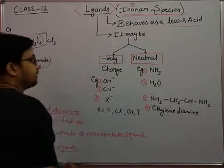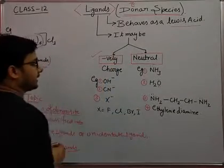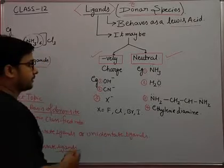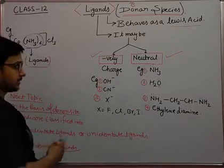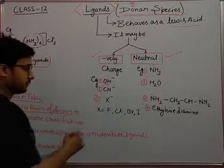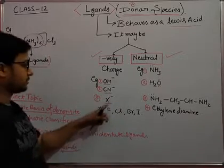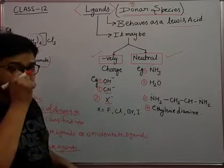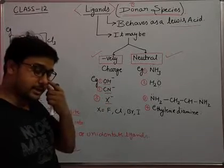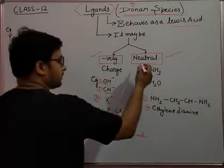Ligands are divided into two parts: negatively charged ligands and neutral ligands. For example, we can have some examples of ligands which have negative charge, such as OH hydroxy group, CN cyanide group, X minus, which is the common symbol for the halogens: fluorine, chlorine, bromine, and iodine.